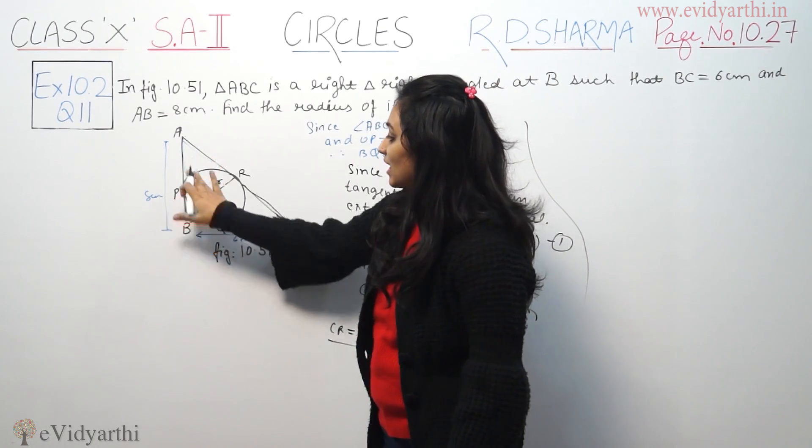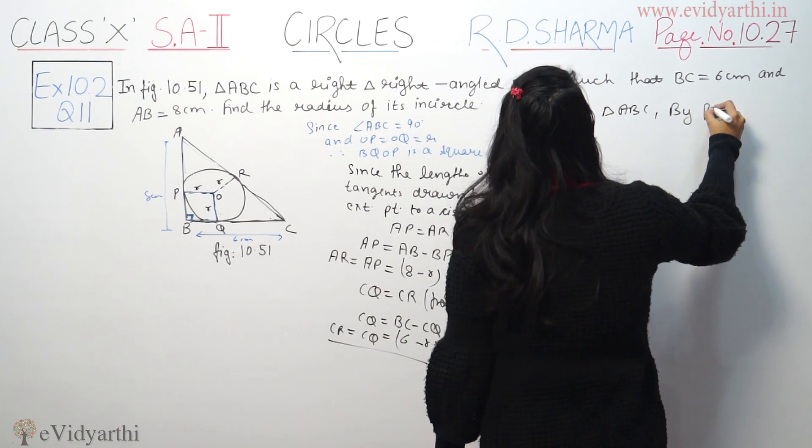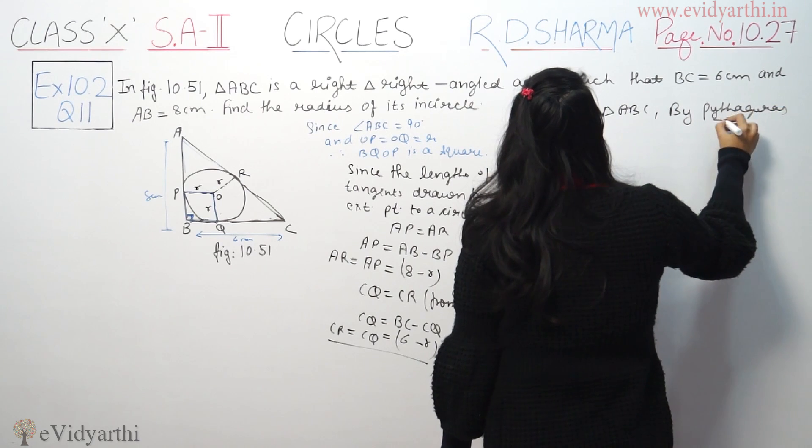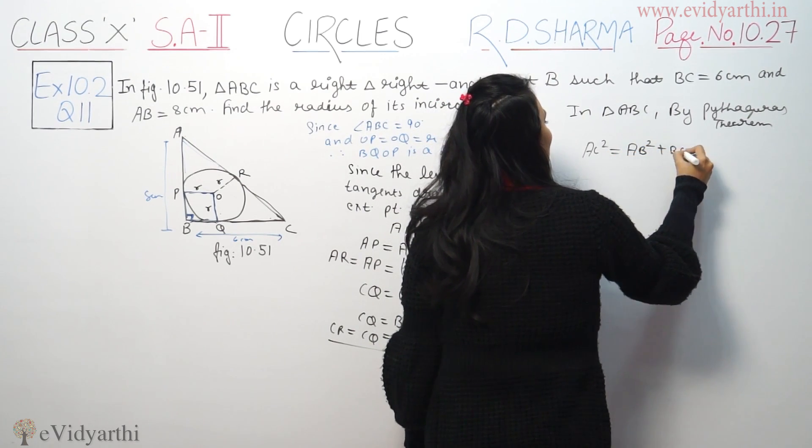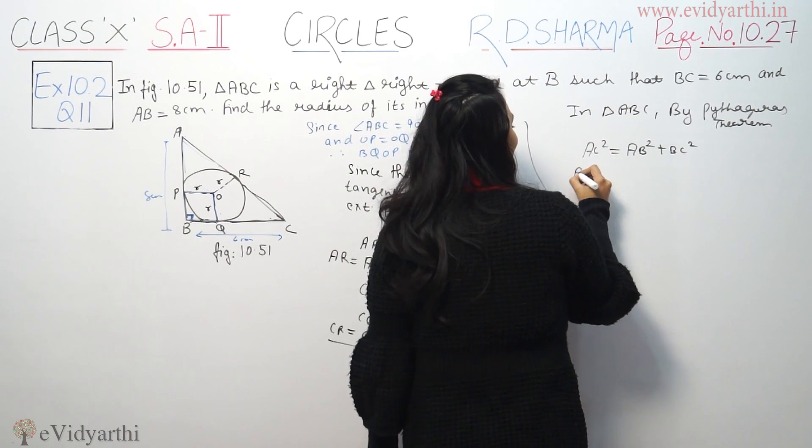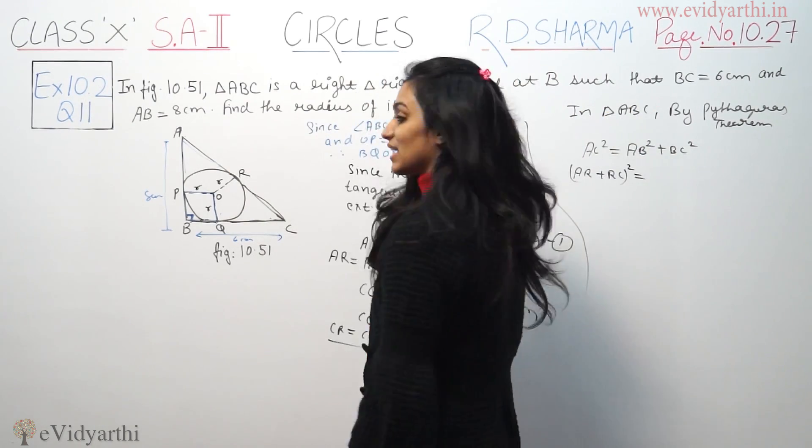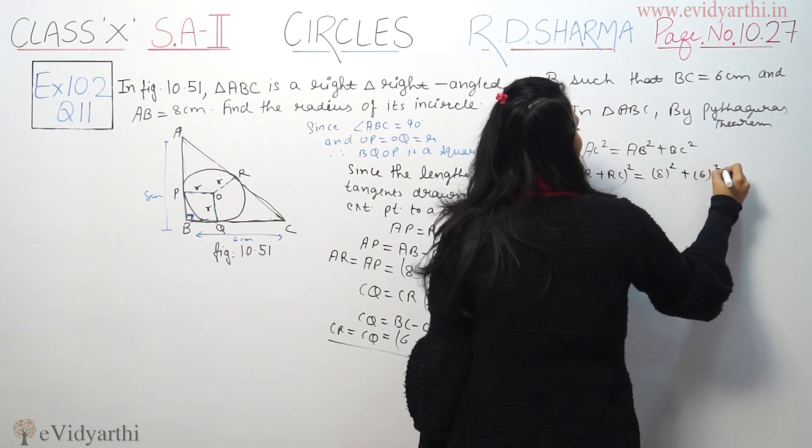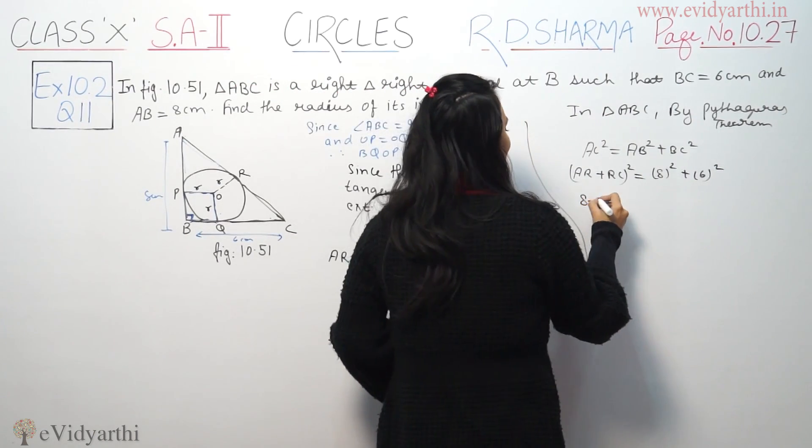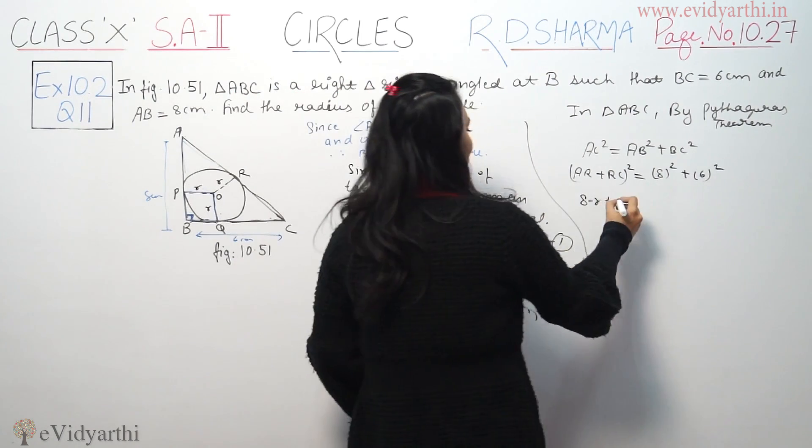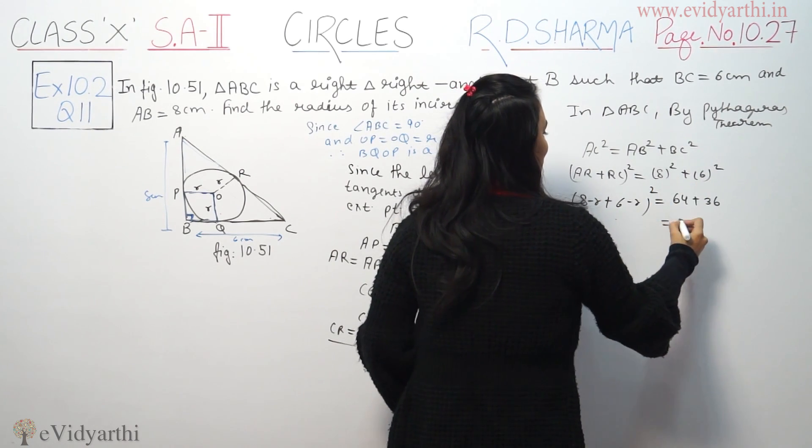Now in triangle ABC, by Pythagoras theorem, we have AC² is equal to AB² plus BC². AC equals AR plus RC. AB is given as 8 and BC is 6. CQ is equal to CR, which is equal to 6 minus r. So the value of AC is equal to square root of...